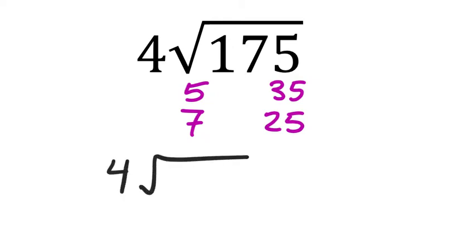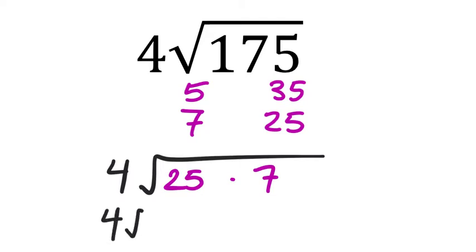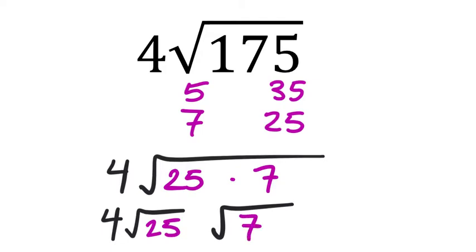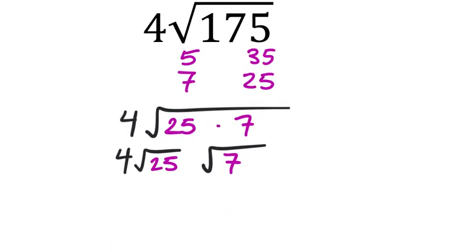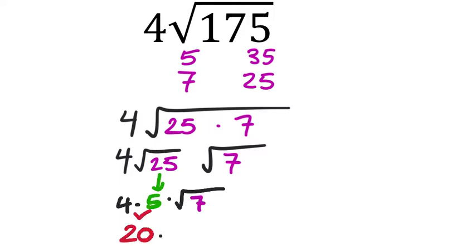So this ends up being 4 times the square root of 25 times 7. I'm going to rearrange that — 25 times 7. 25 is a perfect square, so I'm going to break this up into 4 times the square root of 25 times the square root of 7. The square root of 25 is 5, so I get 4 times 5 times the square root of 7. And 4 times 5 is 20, so it ends up being 20 times the square root of 7.